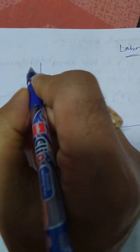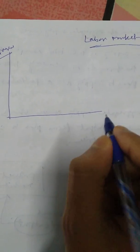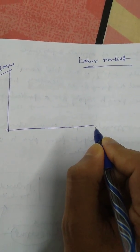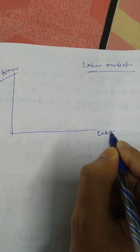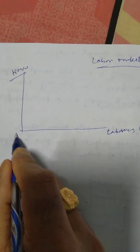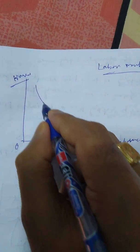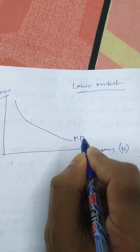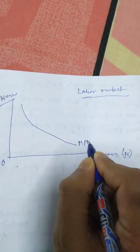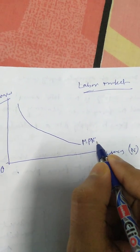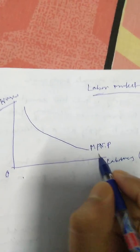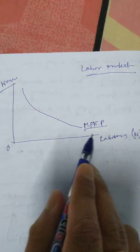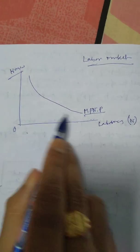In the labor market diagram, along one axis we measure the wage rate and along the other axis we measure the number of laborers (N). This curve is known as the marginal productivity curve of labor — MPN multiplied by P. This is called the demand curve of labor, and this demand curve slopes downward.